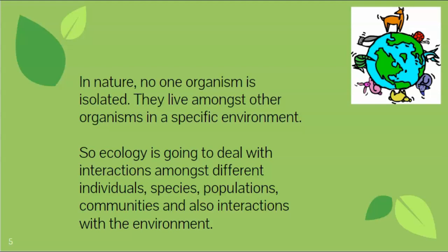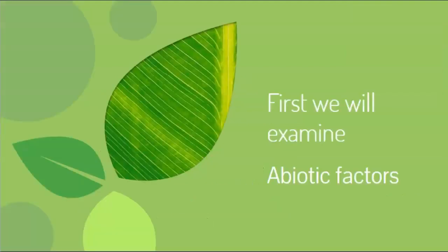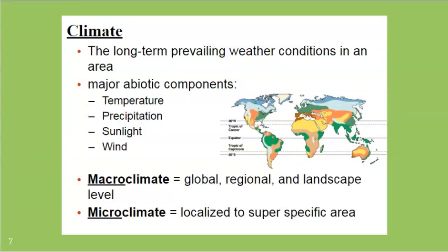One thing you're going to hear a lot in this unit is that things are interconnected — it's not just one isolated thing. We're going to look at how one thing affects another thing affects another thing, and how they're all tied together. First, we'll talk about abiotic factors, since biotic factors will be a bigger focus later. One key abiotic factor is climate.